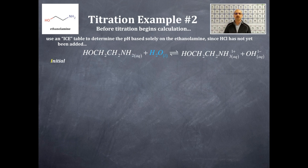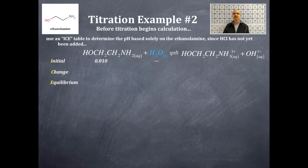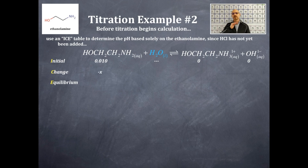We're going to do an ICE table — initial, change, and equilibrium. The initial concentration of ethanolamine is 0.010 molar. We scratch out water. On the product side, we have nothing initially. The change: since we have reactants, we decrease reactants and make more products. Looking at stoichiometric coefficients, which are all 1s, it's minus x for ethanolamine, plus x for the conjugate acid, and plus x for hydroxide. Adding initial and change gives us the equilibrium row: 0.010 minus x for ethanolamine, x for the conjugate acid to ethanolamine, and x for hydroxide.